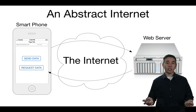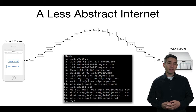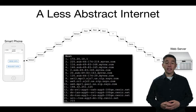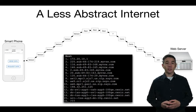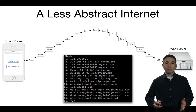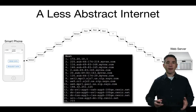If we peel back the curtains and look inside at what the network really looks like, we can see something a little less abstract. Here's an example of what it takes to get a packet from an app on my phone using the Verizon network to a web server located at UCI. You can see there are about 15 different computers along the way — each box in the diagram corresponds to a computer that touches my message on the way from my phone to the web server.